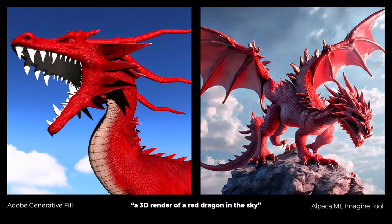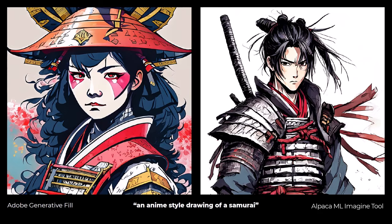I've generated a few more as well. For a 3D render of a red dragon in the sky, Generative Fill produces a very bland red dragon whereas Alpaca produces something much more interesting, more detailed, and just a pretty cool image overall. For an anime-style drawing of a samurai, both are decent and good for their own style, but I personally prefer Alpaca — the artistry seems to be a little more detailed. However, I picked the best option for each, and there were better options in Alpaca for all three, while the other two from Generative Fill were pretty ordinary.